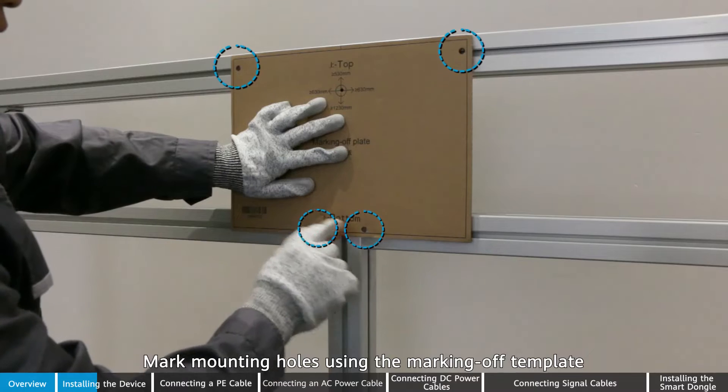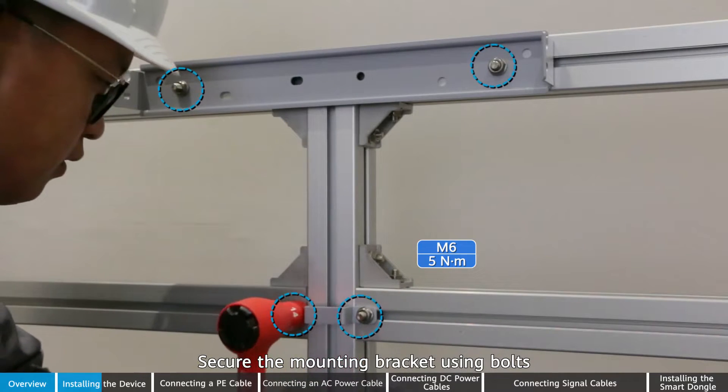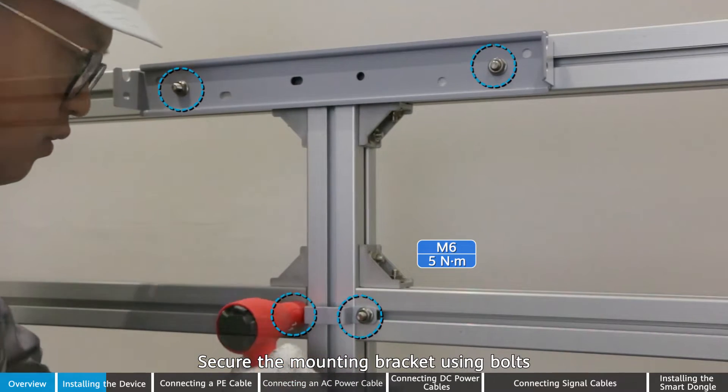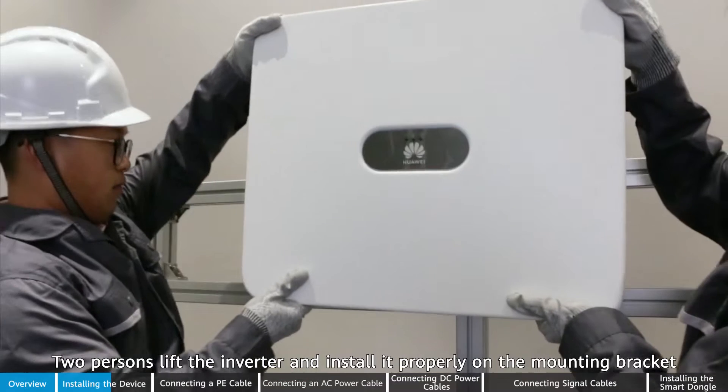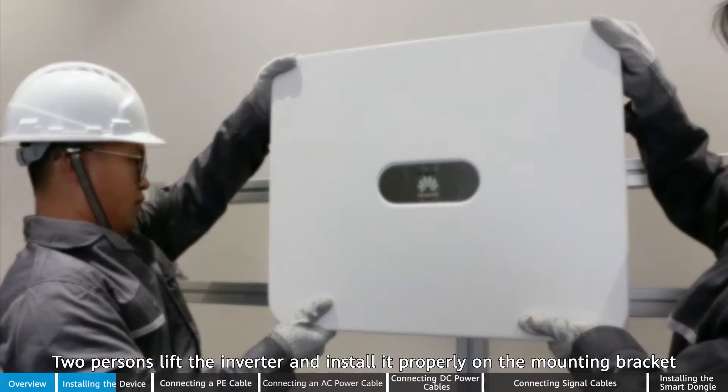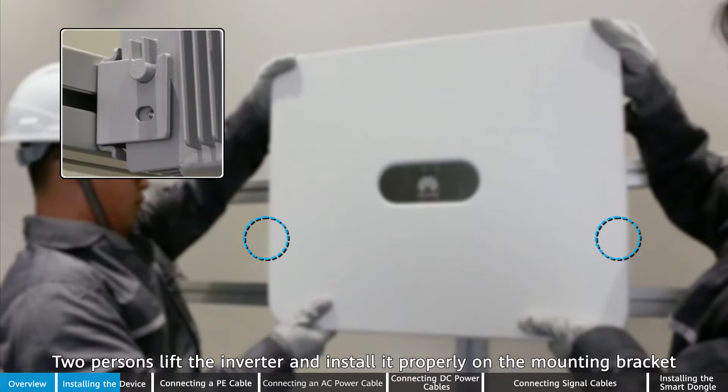Mark mounting holes using the marking off template. Secure the mounting bracket using bolts. Two persons lift the inverter and install it properly on the mounting bracket.